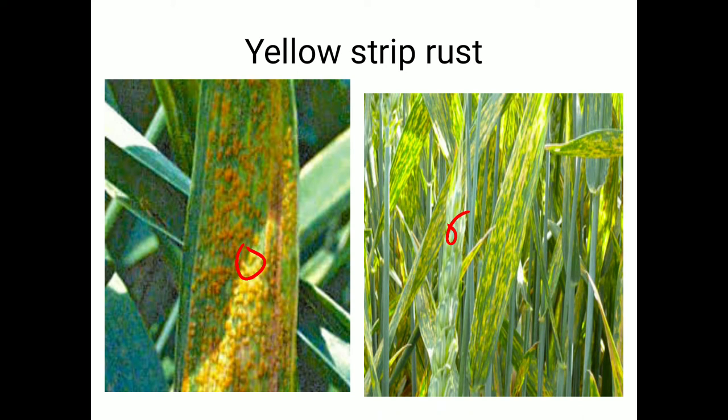The teliospores of yellow strip rust are similar to uredospores but dull black in color and do not burst through the epidermis. The alternate host of yellow strip rust is Bromus japonicus, on which Puccinia recondita survives when there are unfavorable conditions in the environment.